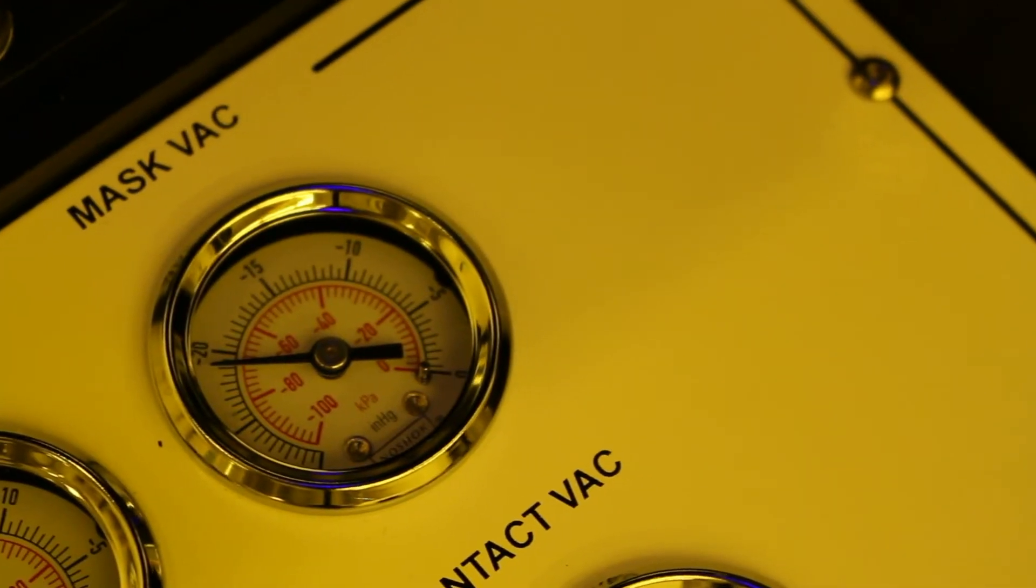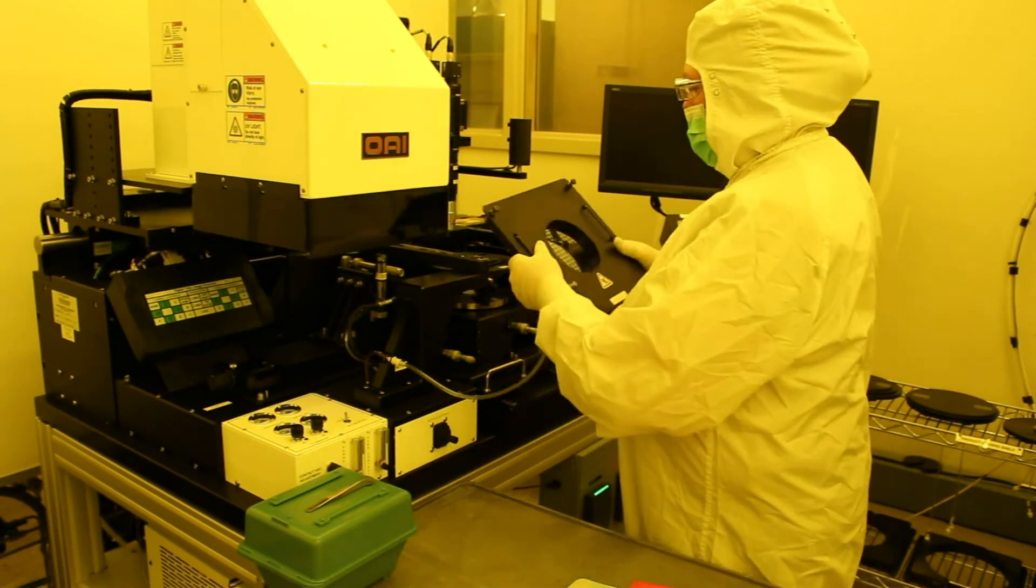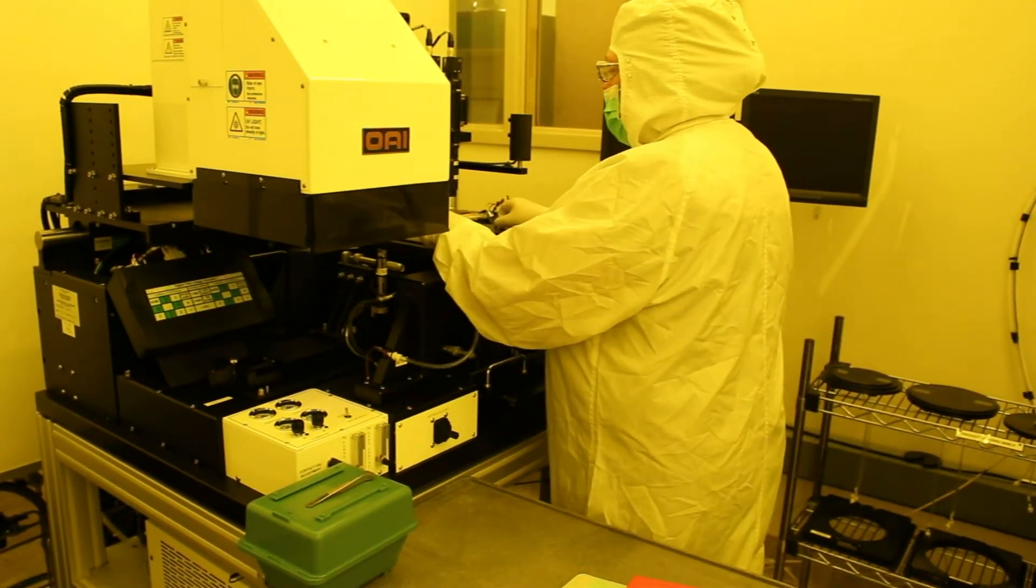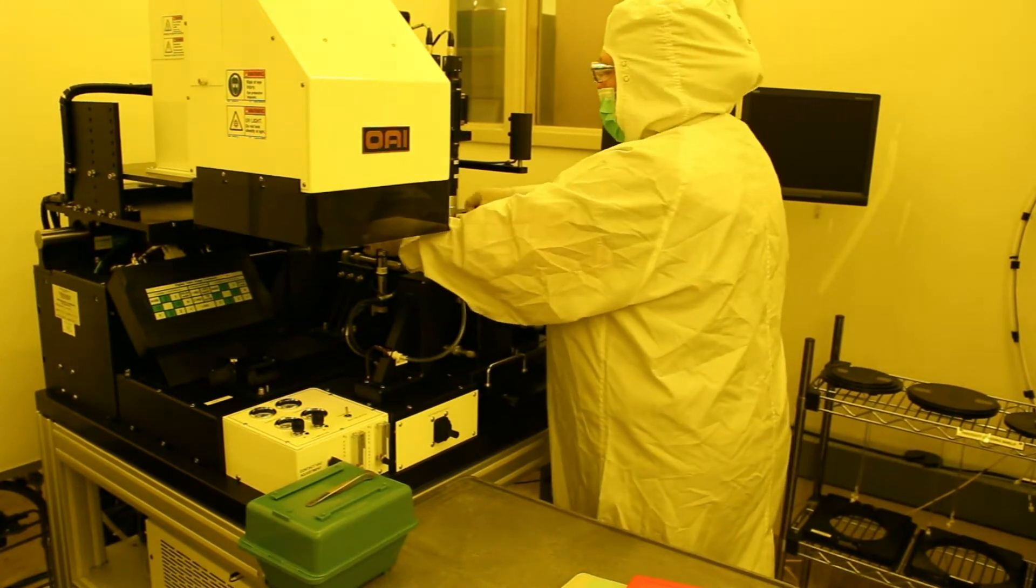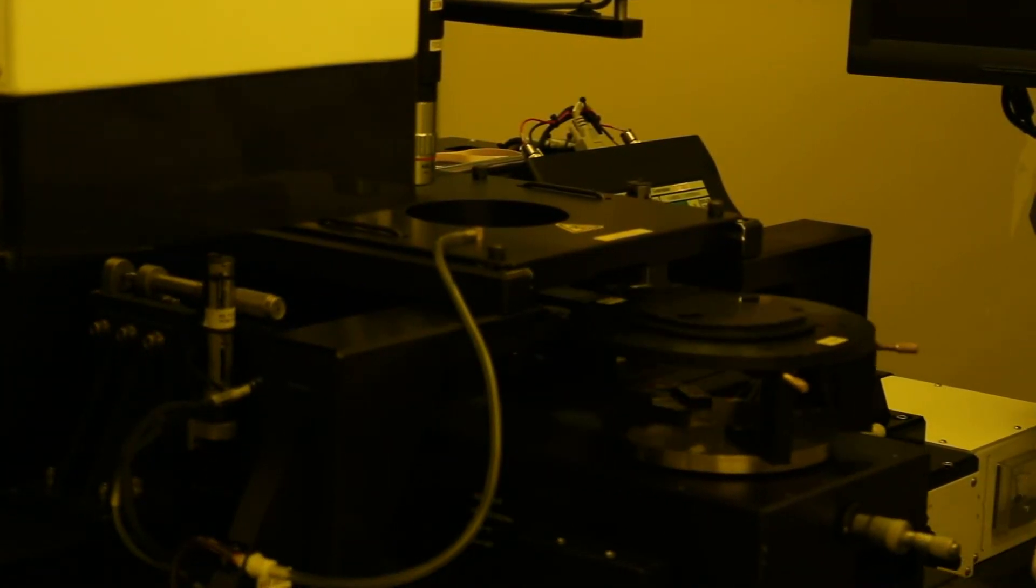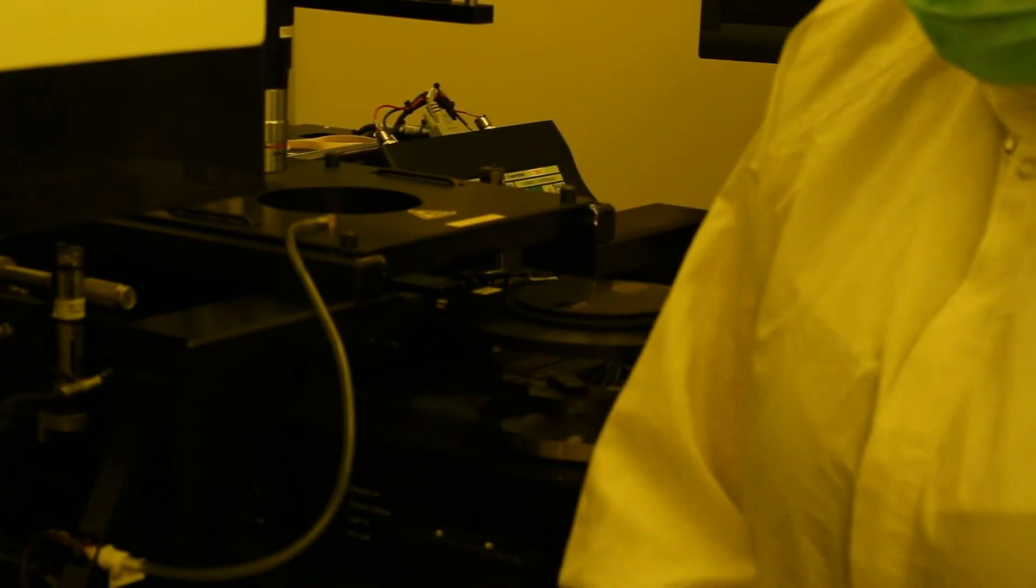When putting the mask on the mask holder, we have to make sure that the chrome side is up on the mask so that when we put the mask holder back onto the frame of the tool that the chrome side is down towards the substrate. We want to have intimate contact between the resist coated side of the substrate to the actual chrome side of the mask so that we don't have any diffraction related problems from the mask. The four screws that hold the mask holder in place are screwed down and now we can go onto the substrate.